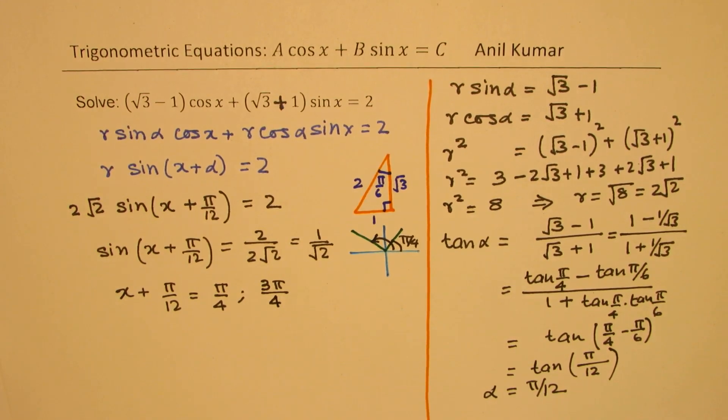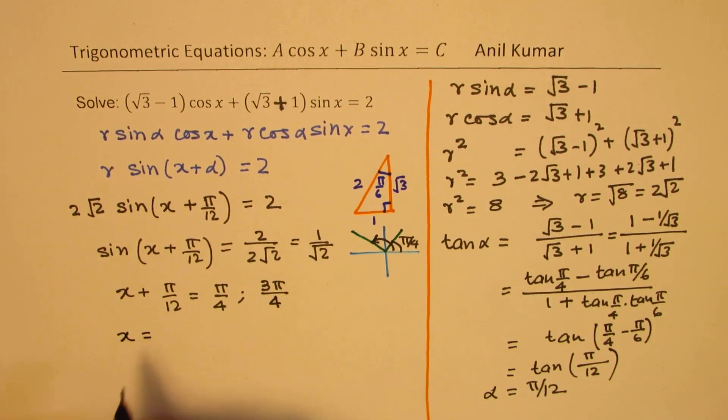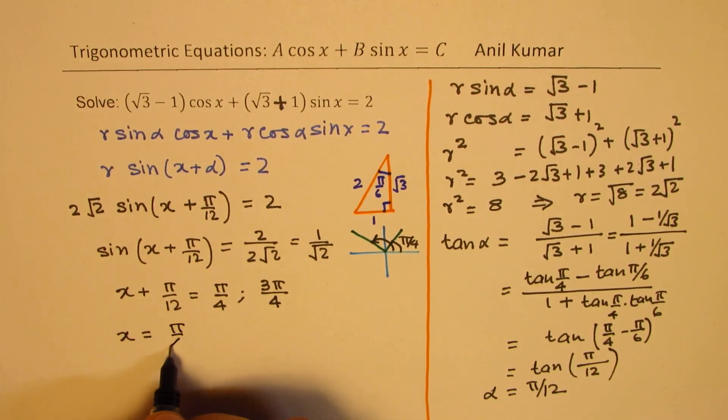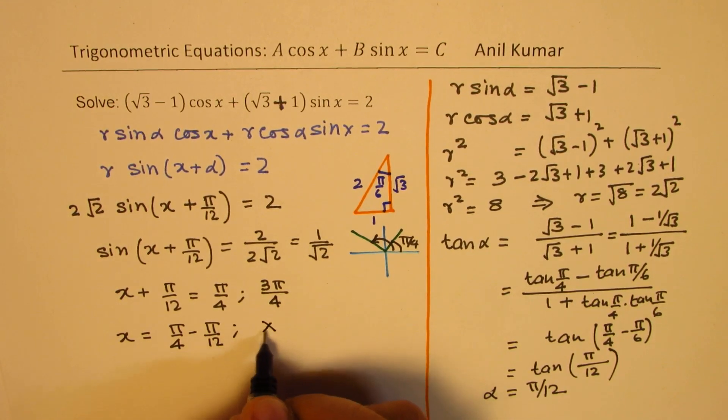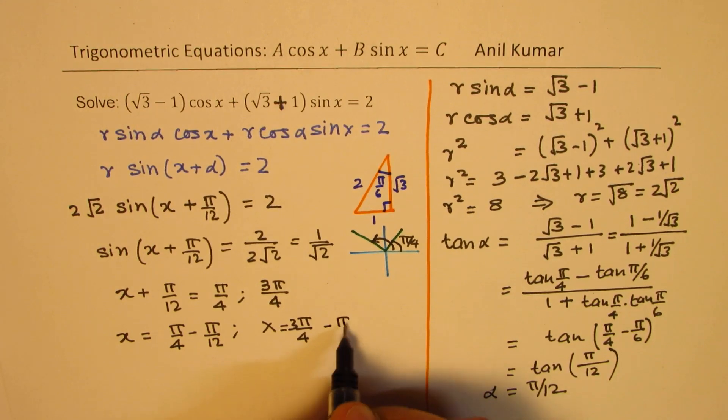Those are the two solutions for us. So accordingly, we get x as equal to pi by 4 minus pi by 12, or we also get x equals to 3 pi by 4 minus pi by 12.